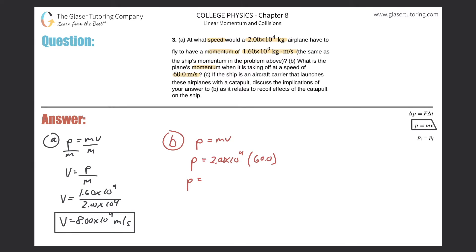So 2 times 10 to the 4th times 60. We have a momentum here of about 1.2 times 10 raised to the 6. And that momentum is kilogram meter per second. So that's the momentum there.